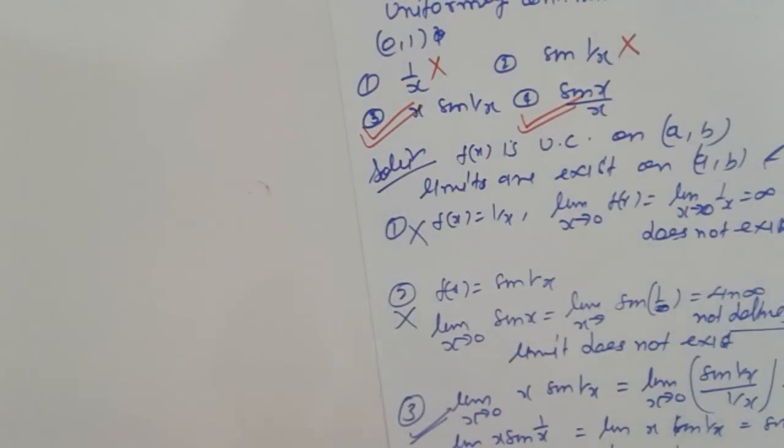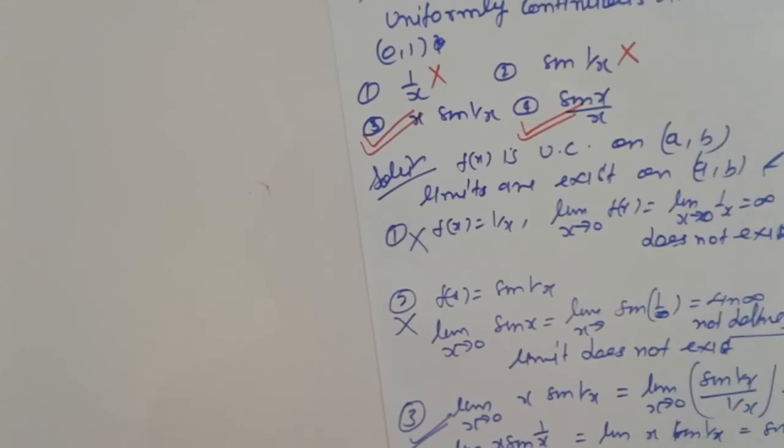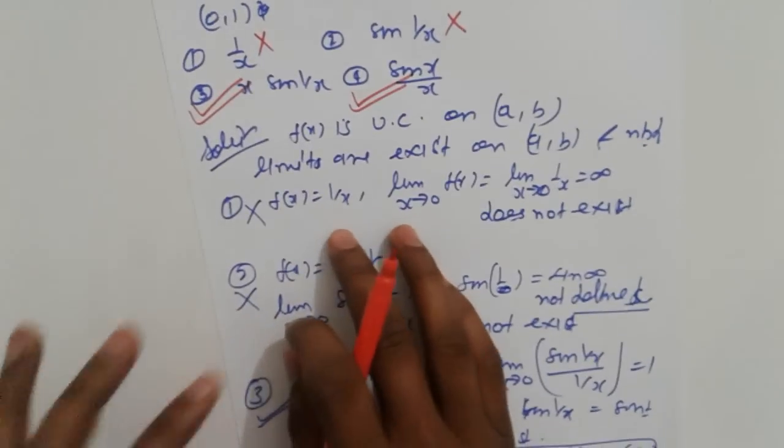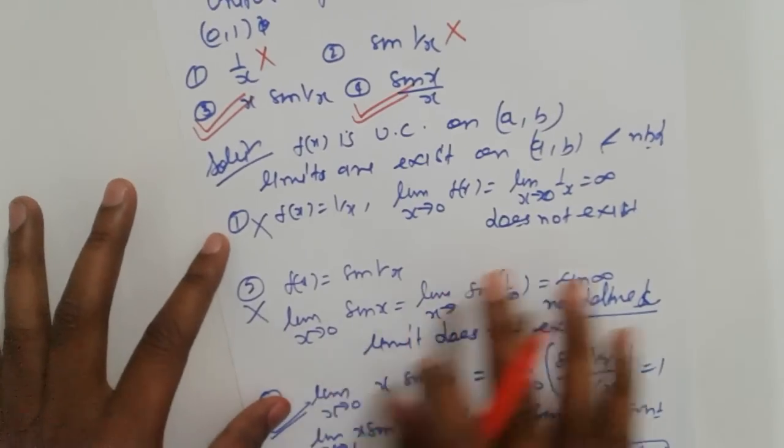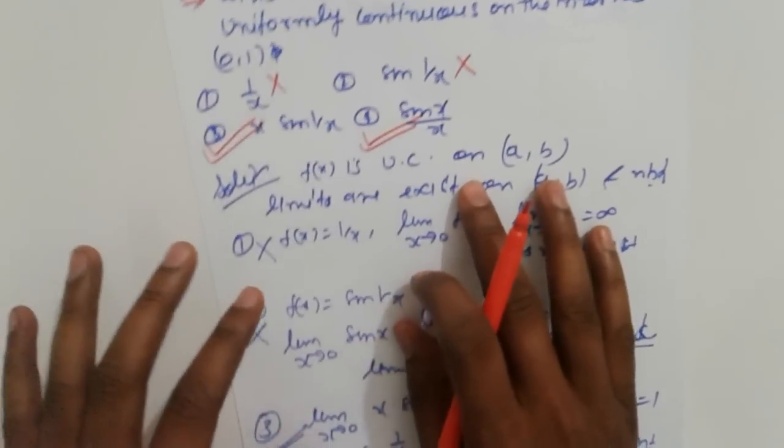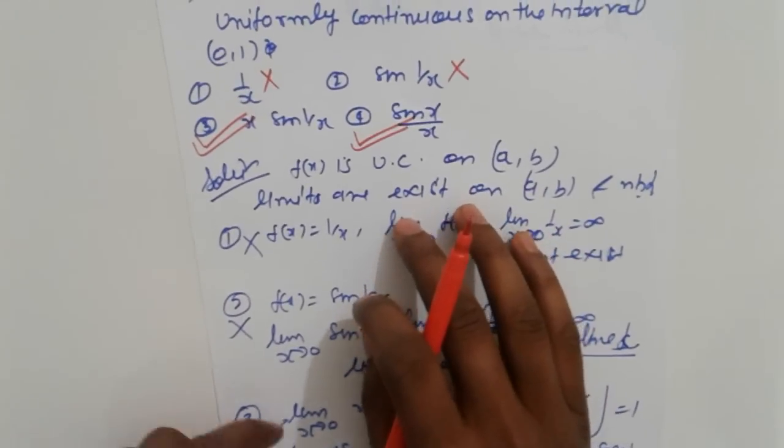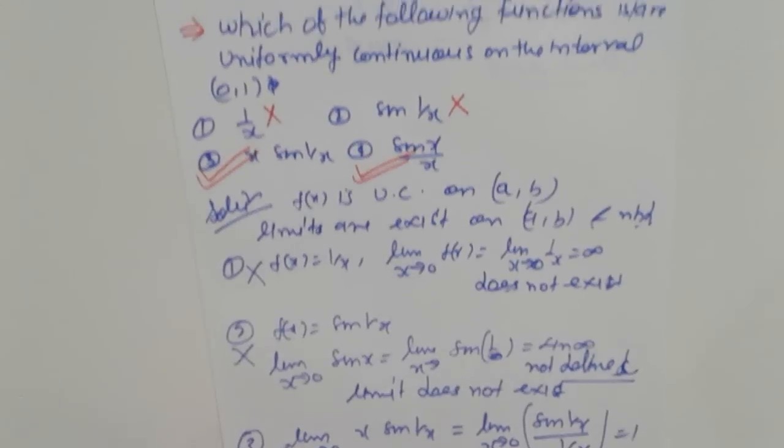So it's a simple technique to check uniform continuity. It may not always work, but here generally we just check the limits and we get the answer. So if the limit exists, then it is uniformly continuous. Thank you.